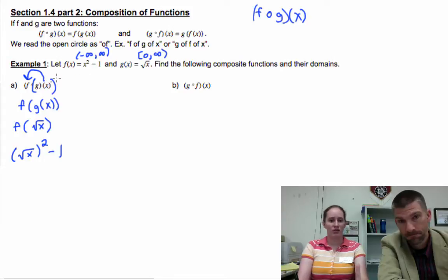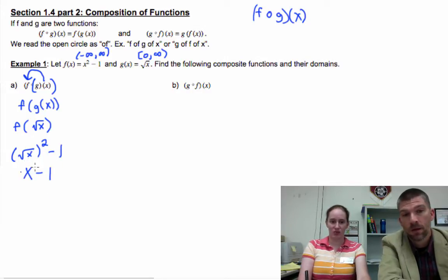What happens is through this process, we're taking g and we're plugging it into f. Now this will simplify: square root of x squared is x. X minus 1. This simplifies to x - 1, which is what f of g of x equals.